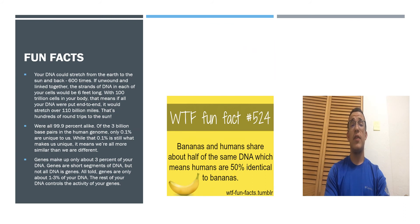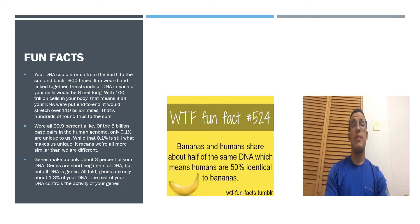Fun Facts: Your DNA could stretch from the earth to the sun and back 600 times if unwound and linked together. The strands of DNA in your cells would be 6 feet long, and with 100 trillion cells in your body, if all your DNA were put end to end it would stretch over 110 billion miles — that's hundreds of round trips to the sun. Another fun fact: we're all 99.9% alike. Of 3 billion base pairs in the human genome, only 0.1% are unique to us, yet that 0.1% is still what makes us unique.